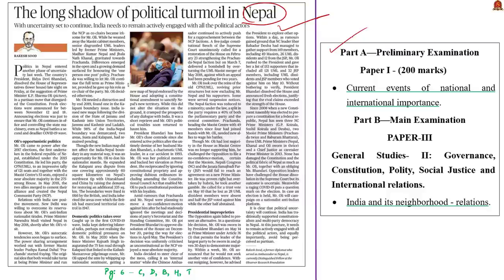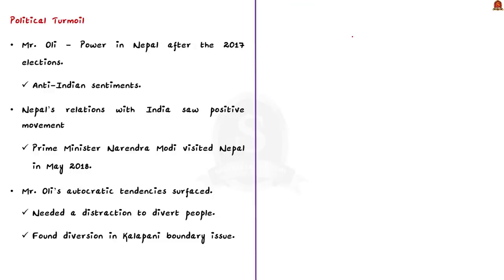Mr. Oli came to power in Nepal after the 2017 elections — the first election under the Federal Republic of Nepal established under the 2015 constitution. Mr. Oli is known for his anti-Indian sentiments, but despite this, Nepal's relations with India saw positive movement during this period. India was willing to overlook its reservations about his anti-Indian nationalist tirades. Prime Minister Narendra Modi visited Nepal in May 2018 shortly after Mr. Oli's visit. However, Mr. Oli's autocratic tendencies soon began to surface.